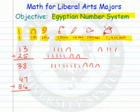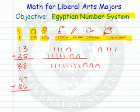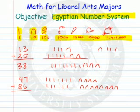Let's do the next one: 47 and 86. I'll put in their hieroglyphics for you. There's our 47 and our 86, and we want to add these two.